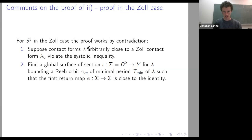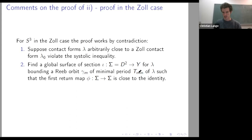You can arrange that if λ is sufficiently close to λ₀, the first return map is C¹ close to the identity. Then there is a fixed point theorem you can apply to see that this map has a fixed point corresponding to a period smaller than the minimum period, giving a contradiction.